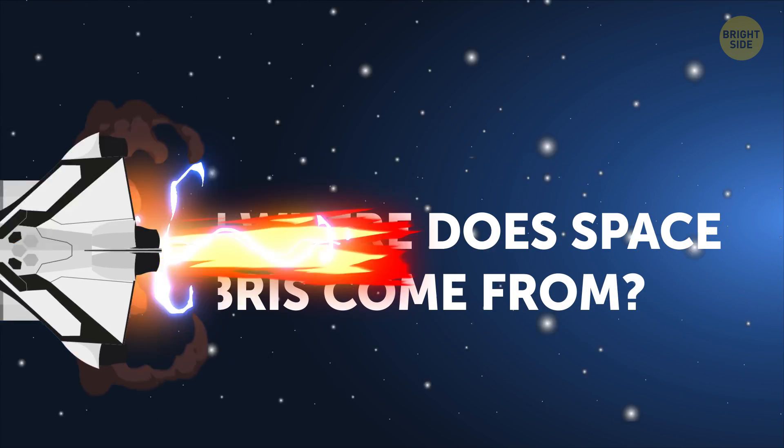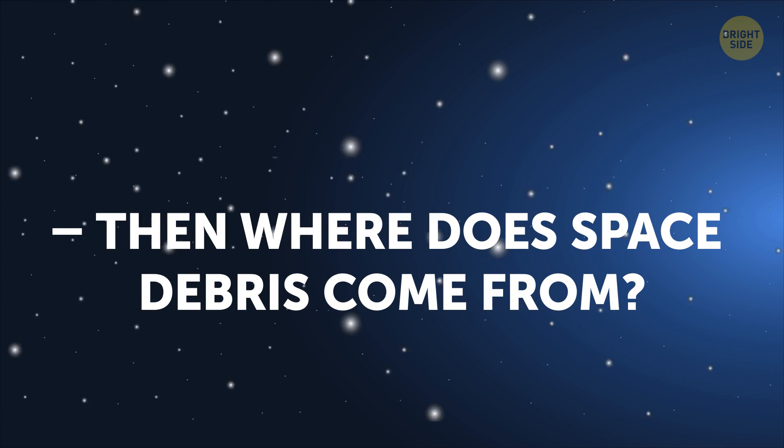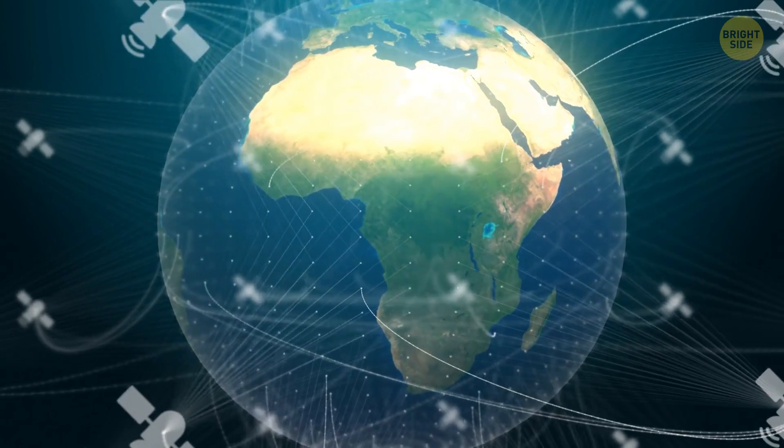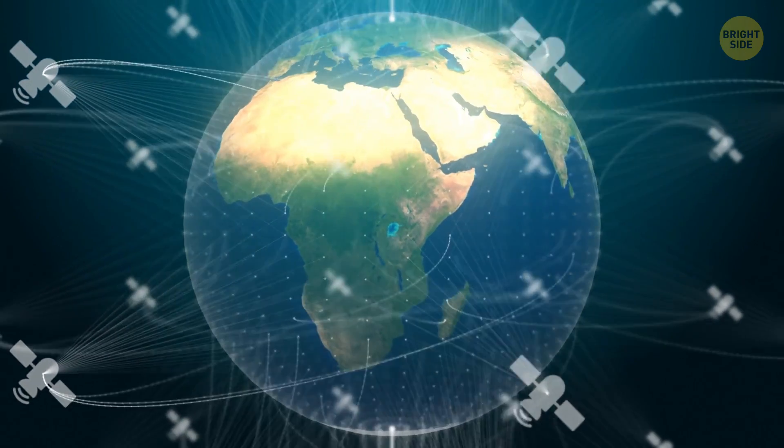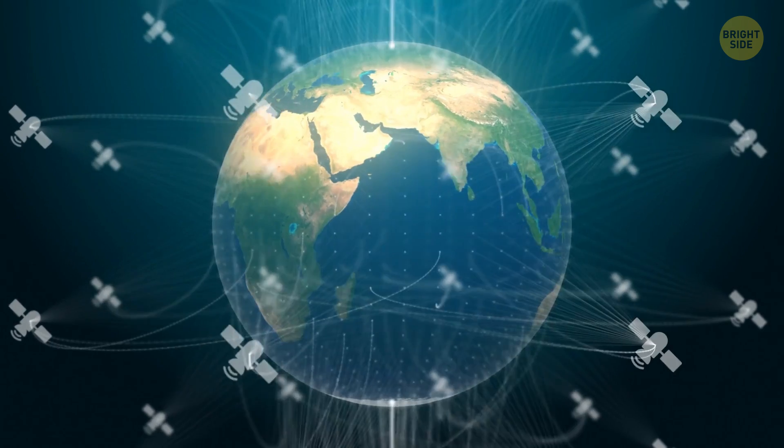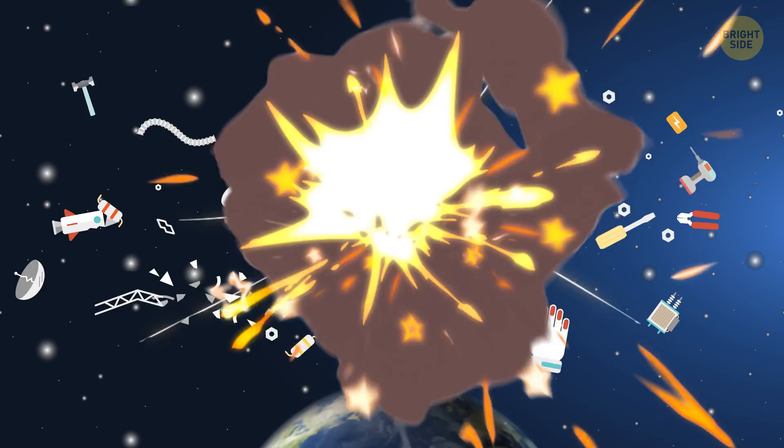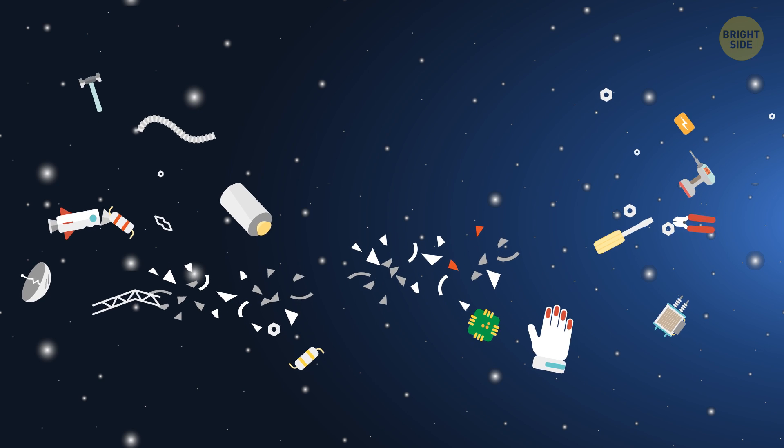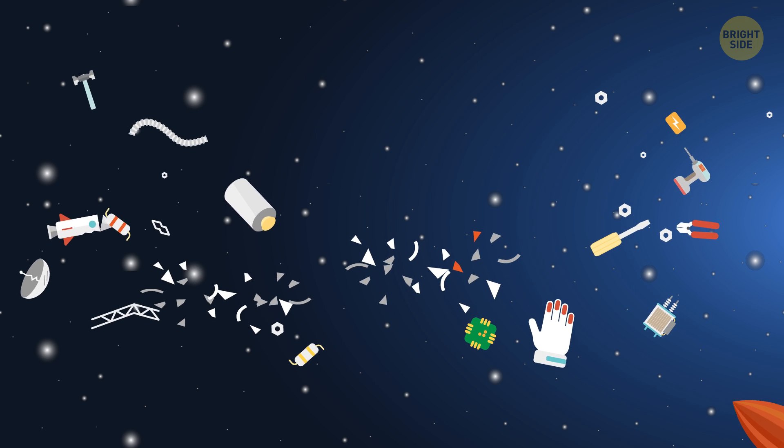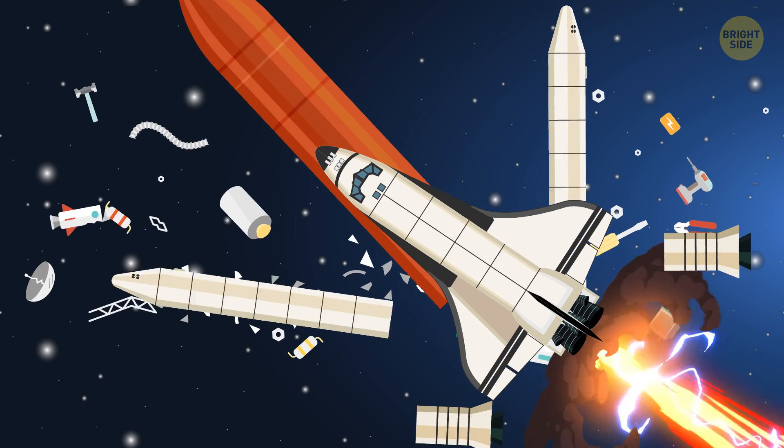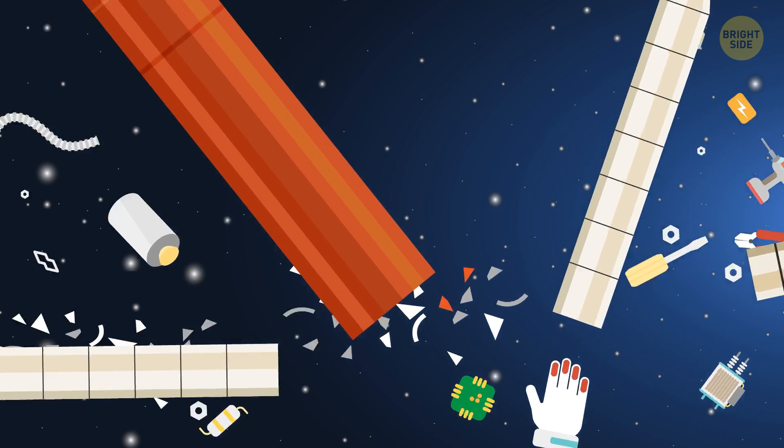Then where does space debris come from? Right now, there are tons of satellites floating around the Earth. You have them to thank for your GPS or satellite TV. But there are so many of these things up there that they sometimes crash into each other. Their remains create space trash. In addition to them, the uncoupled parts of launch vehicles become garbage too.